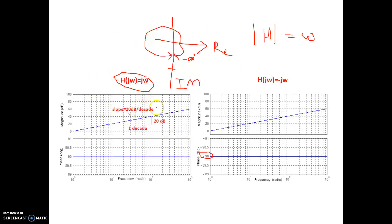To recap: we've looked at several Bode plot examples. H = 100 gives a flat 40 dB magnitude line and 0° phase. H = −100 gives the same 40 dB magnitude but 180° phase. H = jω gives a 20 dB/decade rising magnitude and 90° phase. Bode plots are simply the magnitude-frequency and phase-frequency plots we use for filters, but with a logarithmic x-axis — allowing us to represent circuit behavior across a much larger spectrum of frequencies than a linear scale would permit.